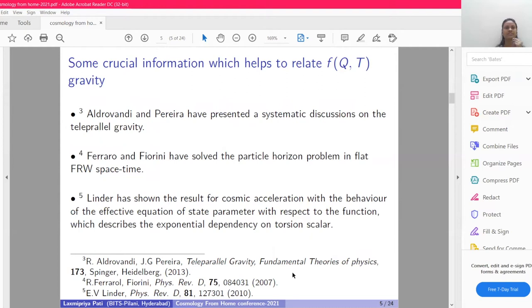Next, I will explain some crucial information which helps to relate in f(Q,T) gravity. Before publishing f(Q,T) gravity, our prominent scientists discovered some terms that help to further study in f(Q,T) gravity. Here I mentioned some important terms and which scientists described them. Alderwendi and Pereira have presented a systematic discussion on teleparallel gravity. Ferraro and Fiorini have solved the particle horizon problem in flat FRW spacetime.